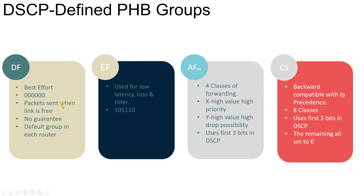Default Forwarding is the best-effort service — whenever there is space, the packet will traverse. The DSCP value for DF is all six zeros. There is no guarantee for delivery. If you do not specify which PHB group a packet belongs to, it follows the DF method by default.